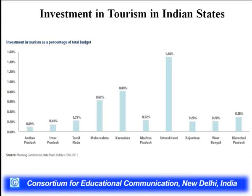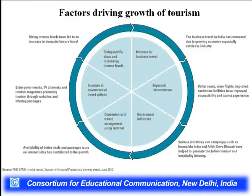Regarding investment in tourism across Indian states, Uttarakhand, Karnataka, and Maharashtra are investing a lot in tourism. However, many states like Andhra Pradesh, Uttar Pradesh, and West Bengal do not have as much investment, even though Rajasthan gets a lot of tourists but investment is not so strong there.